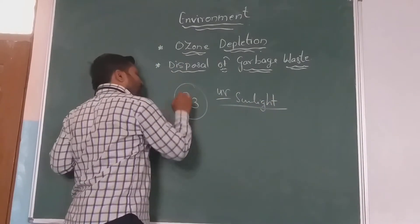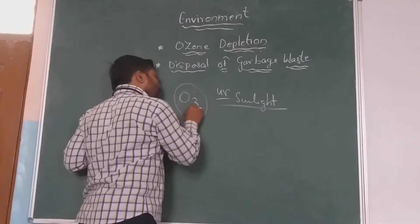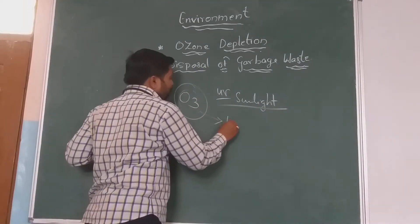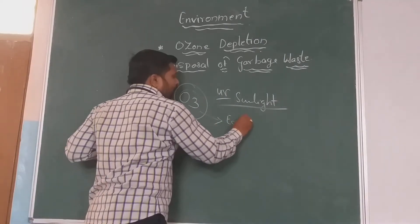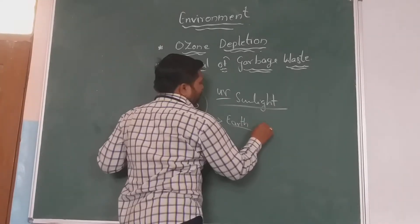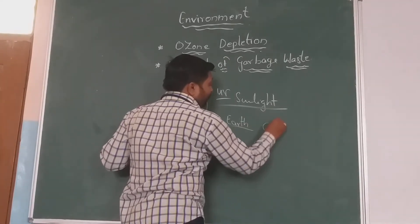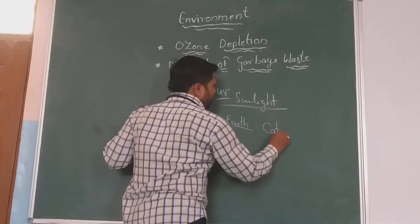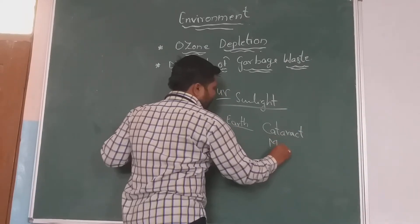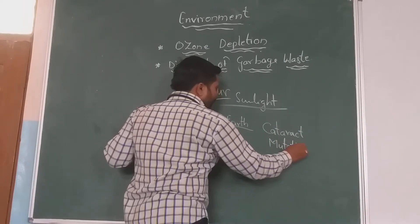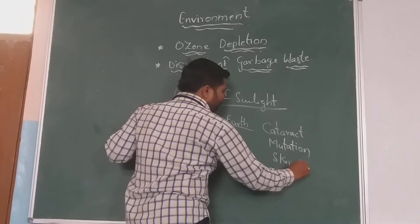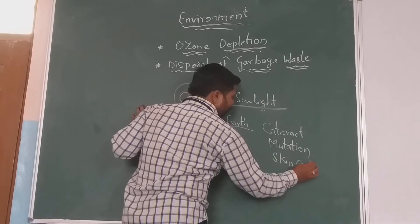If this ozone layer is depleted, then those rays enter into the earth's surface. What will happen? The people will suffer from various disorders, especially conditions like cataract. Not only that, there are mutational changes in the DNA, and also skin cancer and other disorders which we can see.